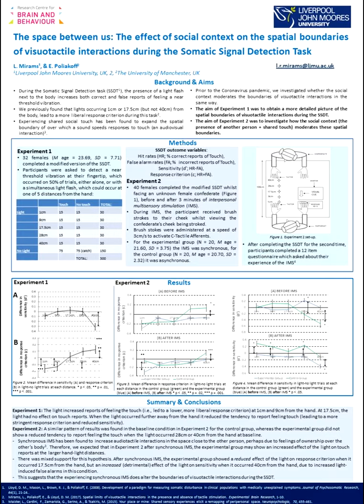In experiment one, the light increased reports of feeling touch at one and nine centimetres from the hand. When it occurred further away from the hand, it reduced the tendency to report feeling touch, leading to a more stringent response criterion and reduced sensitivity. These results are shown in figure two, which shows the difference in sensitivity and response criterion between light and no-light trials at each distance condition.